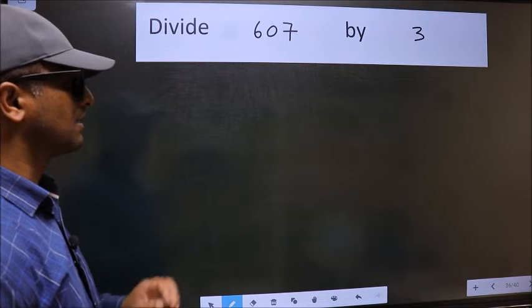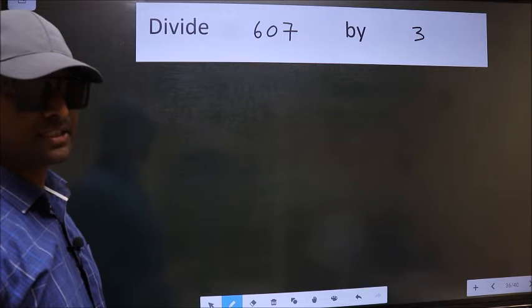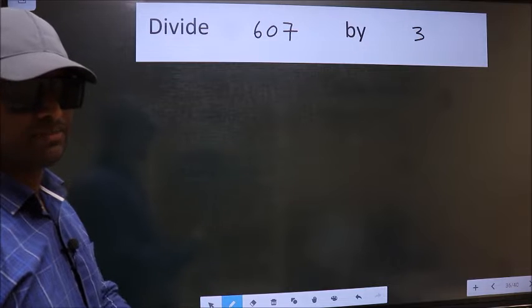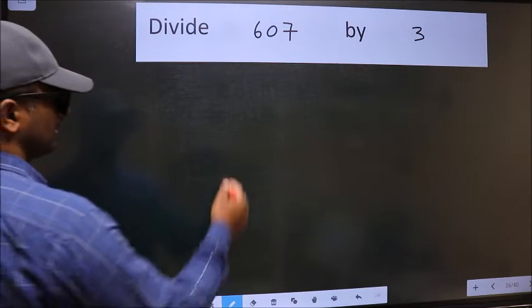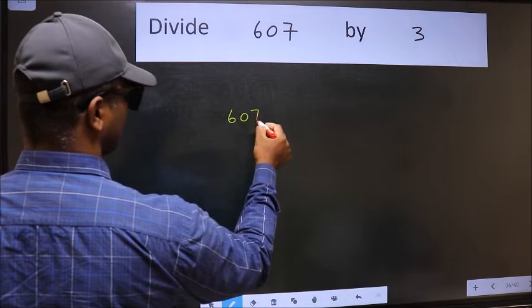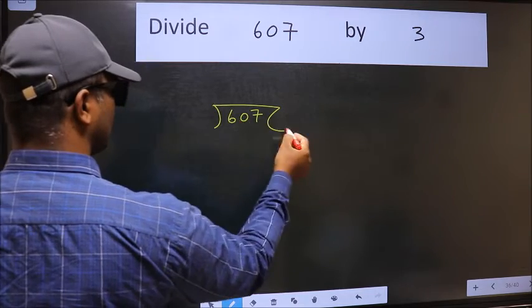Divide 607 by 3. To do this division, we should frame it in this way. 607 and 3 here.